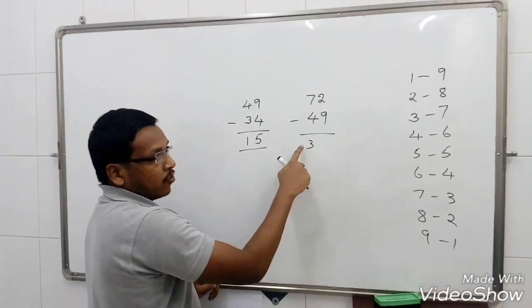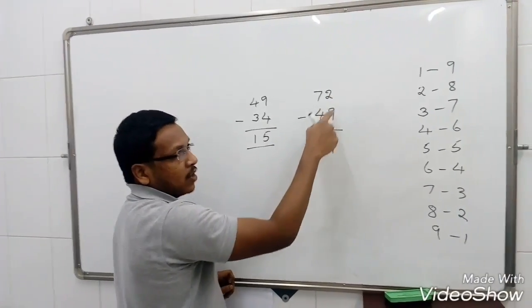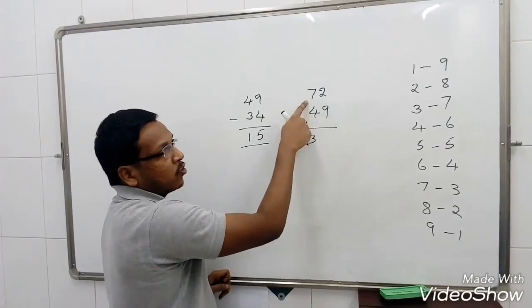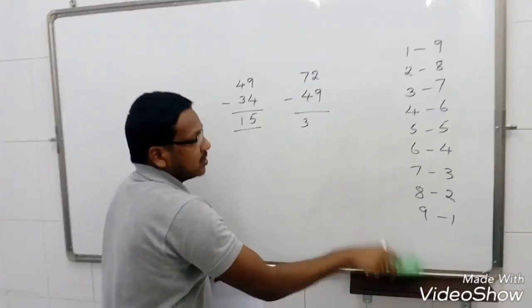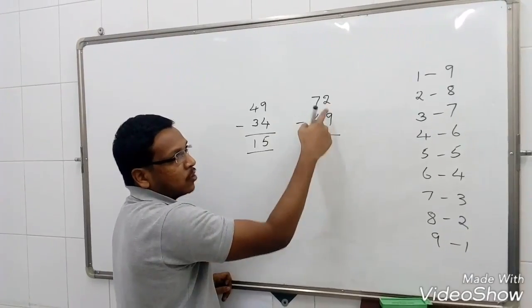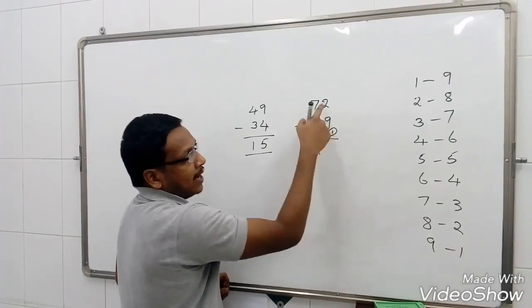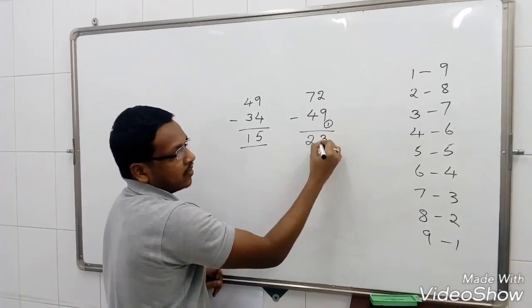So, 7 minus 4 is 3. Before writing this, we check the next one whether we can subtract or not directly. Yes, we cannot subtract here directly. So, 7 minus 4 is 3. We have to reduce this number by 1. So, 3 becomes 2. And 2 add to the complement of 9. 9 complement is 1. So, add 2 with 1. 2 plus 1 is 3. This is the result.